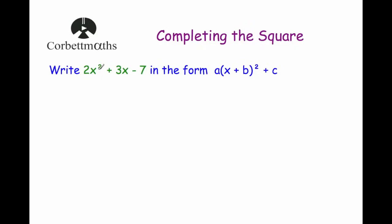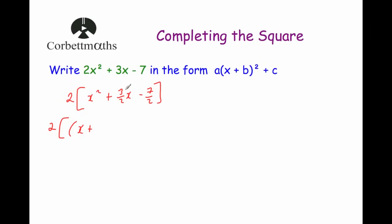Our last question says write 2x² plus 3x minus 7 in the form a(x + b)² + c. Again we take the 2 out, giving 2 times square brackets x squared plus 3 over 2 x minus 7 over 2. We then do completing the square inside: x plus 3 over 4, close bracket squared — halving a fraction means doubling the denominator. We always subtract the square: 3 over 4 squared is 9 over 16, so subtract 9 over 16, then subtract 7 over 2, close square brackets.